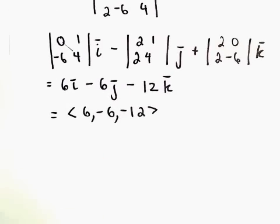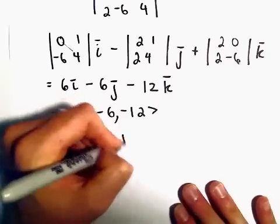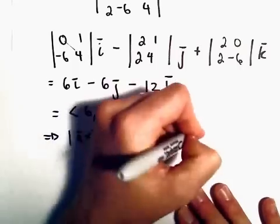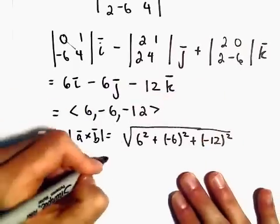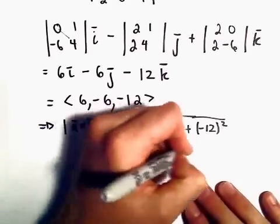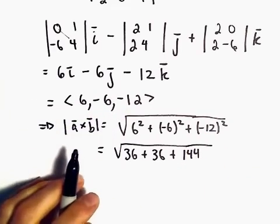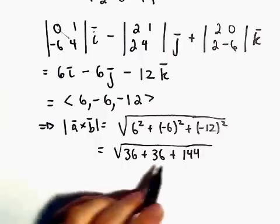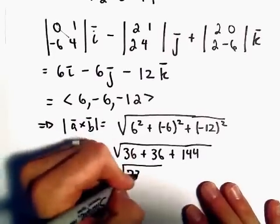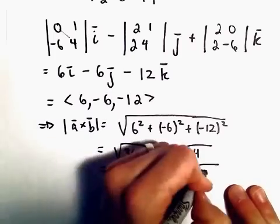And now we'll just find the magnitude of this. So that says the magnitude of A cross B is going to be 6 squared plus negative 6 squared plus negative 12 squared. Well, let's see. 6 squared is 36. Negative 6 squared is also 36. Negative 12 squared will be 144. So if we simplify that, 144 plus 72, that's going to leave us with the square root of 216.